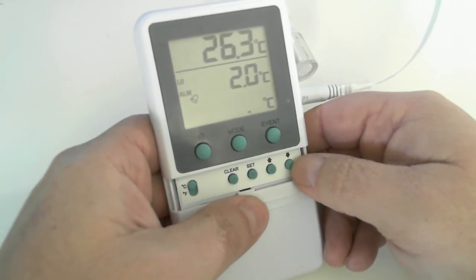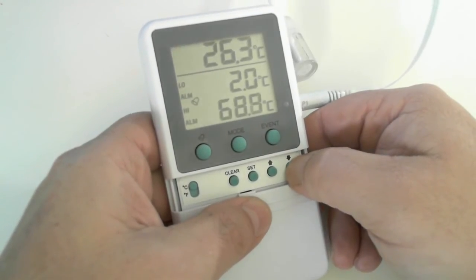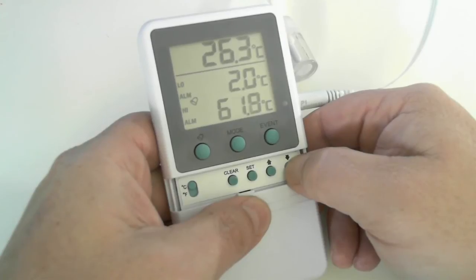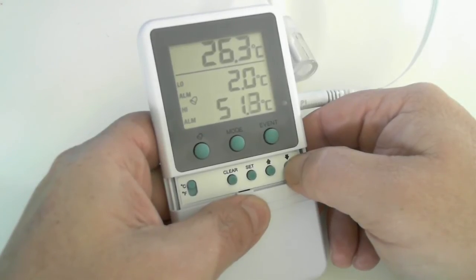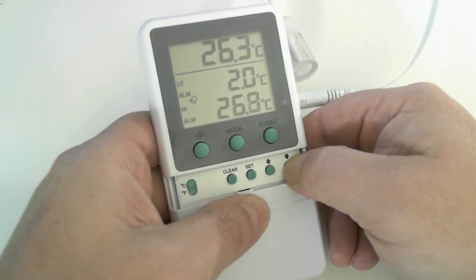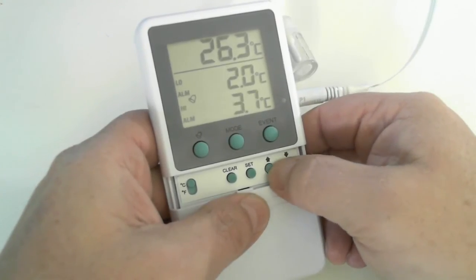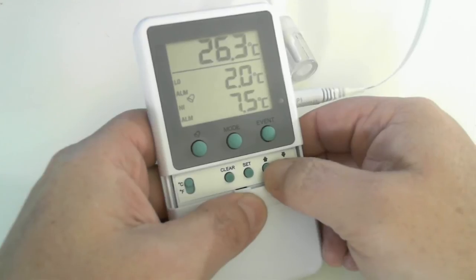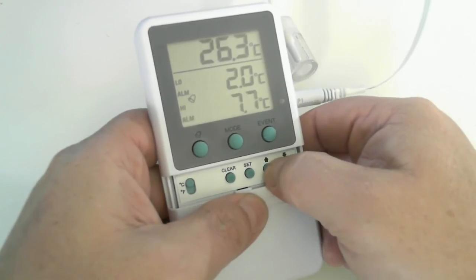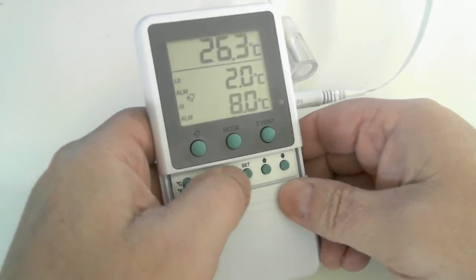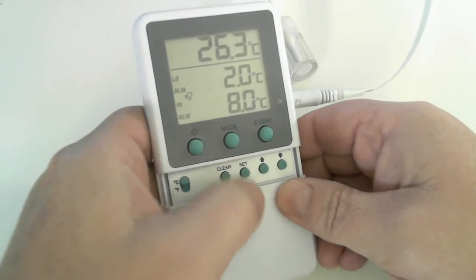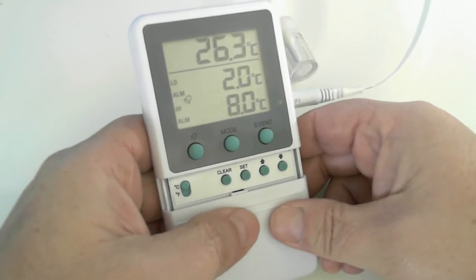And I'll set our high for 8 degrees C. Now, when we do set our high alarm for 8 degrees C, that is lower than 26.3 degrees C, which is our current room temperature measured by the bottle thermometer. Went a little too far there. Let's go back up. And as I said, once I hit that set, we will go into an alarm condition. But that's okay.